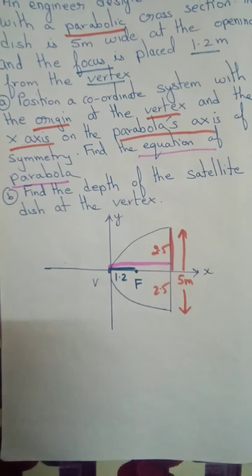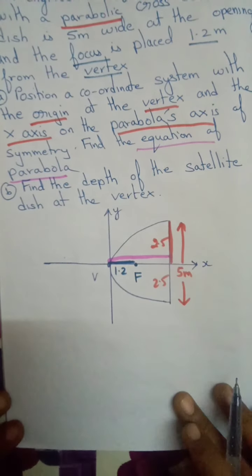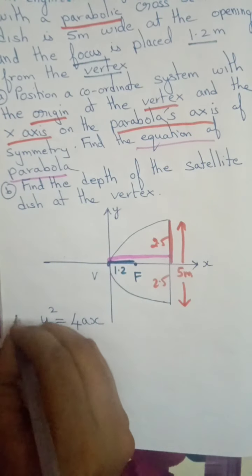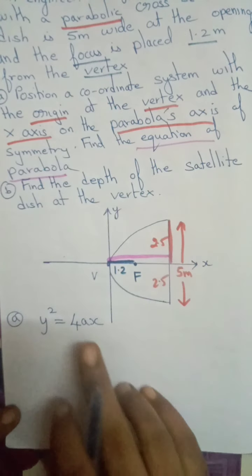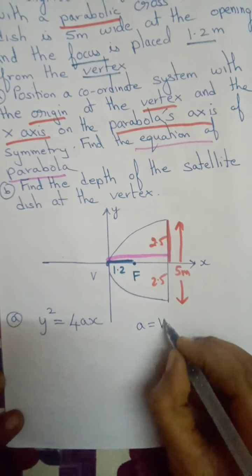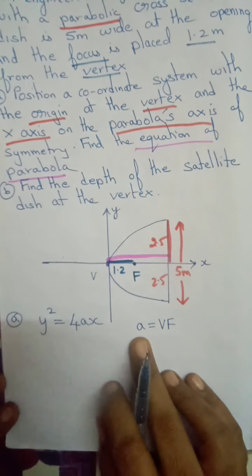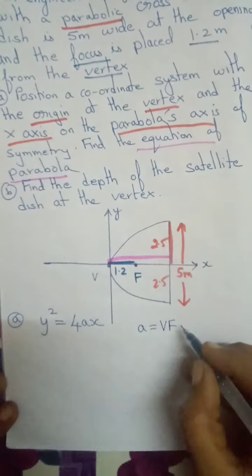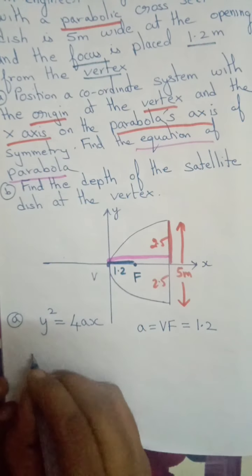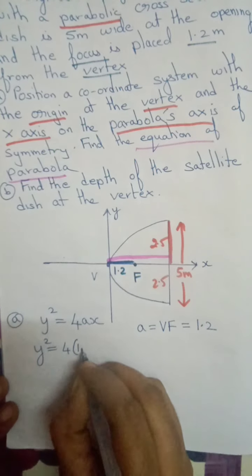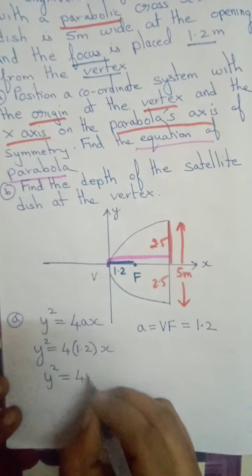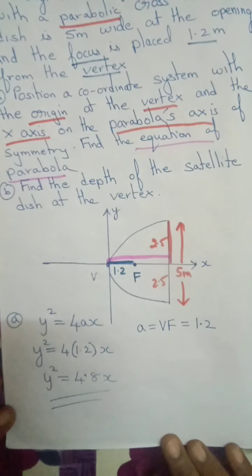Let me write the equation of the parabola opening rightwards. The standard form is y² = 4ax. Now let me find the value of a. The distance between the vertex and the focus is 1.2, so a = 1.2. Therefore y² = 4 × 1.2 × x, which gives y² = 4.8x. This is the answer to the first subdivision.